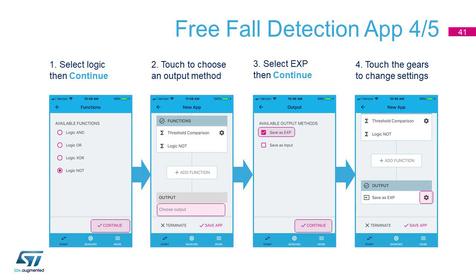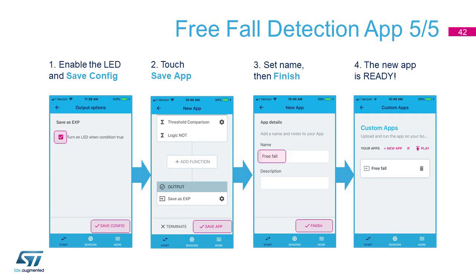Let me remind you that in freefall conditions, the perceived acceleration due to gravity approximates zero. This app is now saved as EXP. Inside the output properties, we can enable the user LED. Let's save the app with the name Freefall.